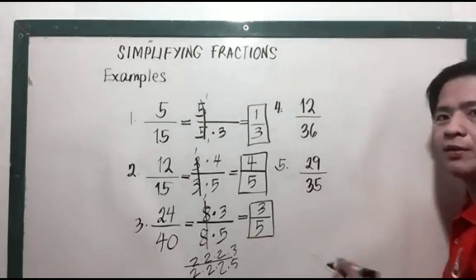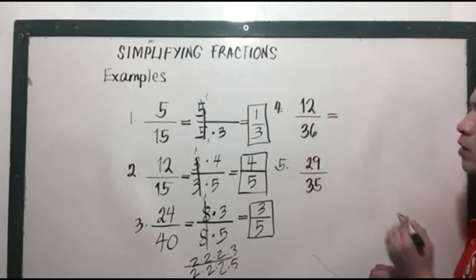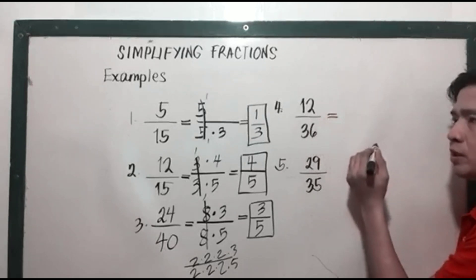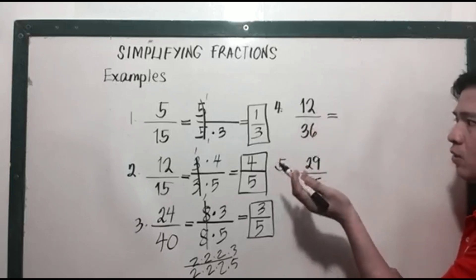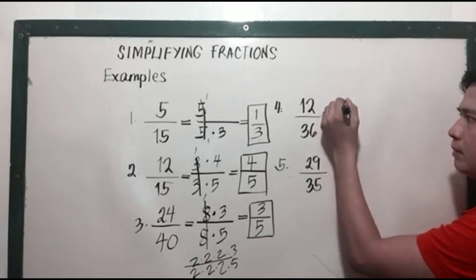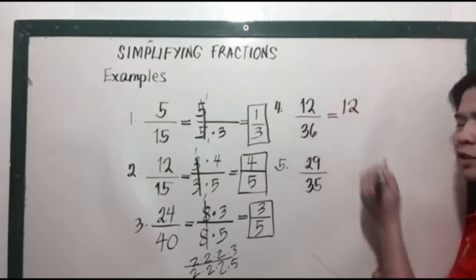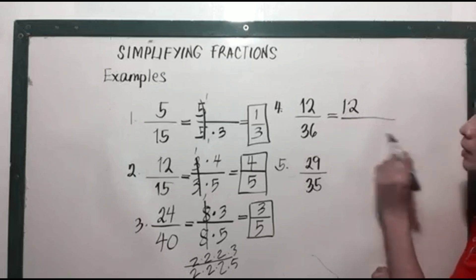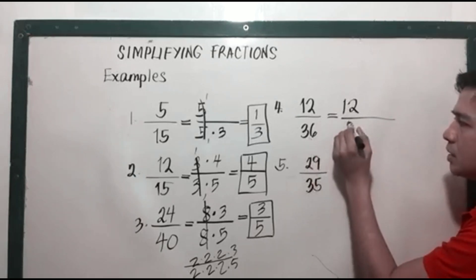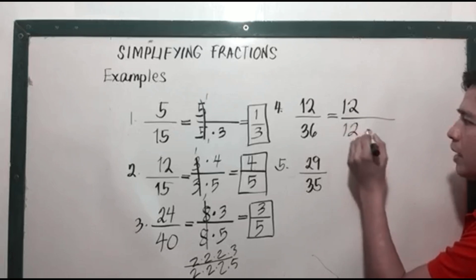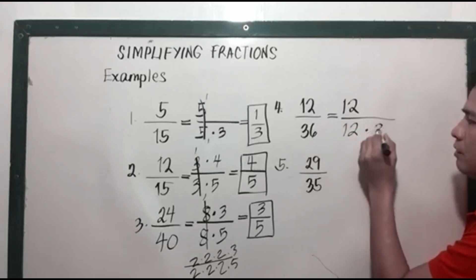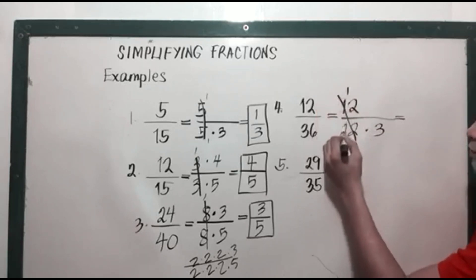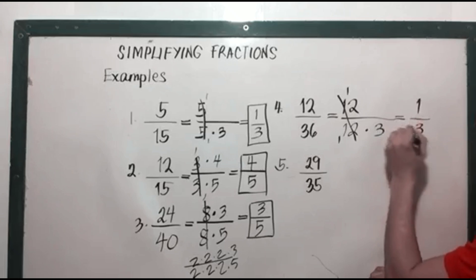Number 4, we have 12 over 36. 12 can be factored as 4 times 3 or 2 times 6, but the easiest approach is to take the greatest common factor, which is 12. So 36 is 12 times 3. We cancel the 12s, leaving 1 over 3.